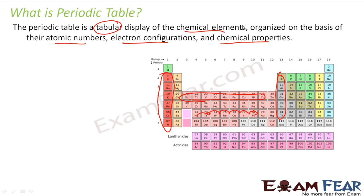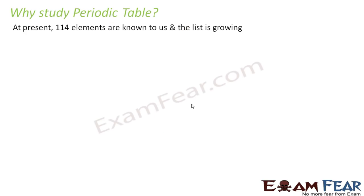The goal is that we have so many chemical elements and we have to arrange them on some basis, so that it is easy to pick one element and tell what is the property of that element. So why should we study the periodic table?